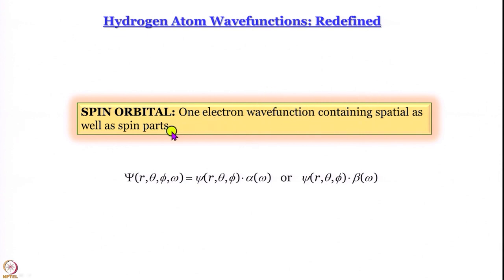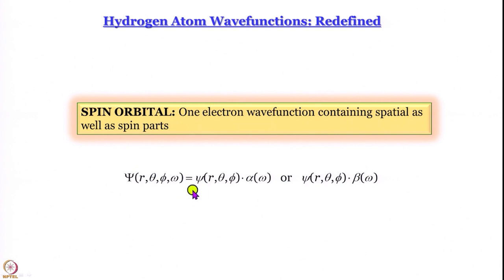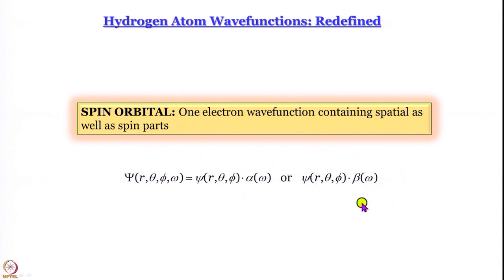For multi-electron atoms it is not sufficient to specify n, l, and m — you also have to specify m_s (not s; remember s = ½ for all electrons). The total wave function ψ, as a function of r, θ, φ, and the spin coordinate ω, is given by ψ(r,θ,φ) multiplied by the spin wave function α or β. So for one electron, it can reside in the same orbital in two ways — with up spin or with down spin. This state is called a doublet state.